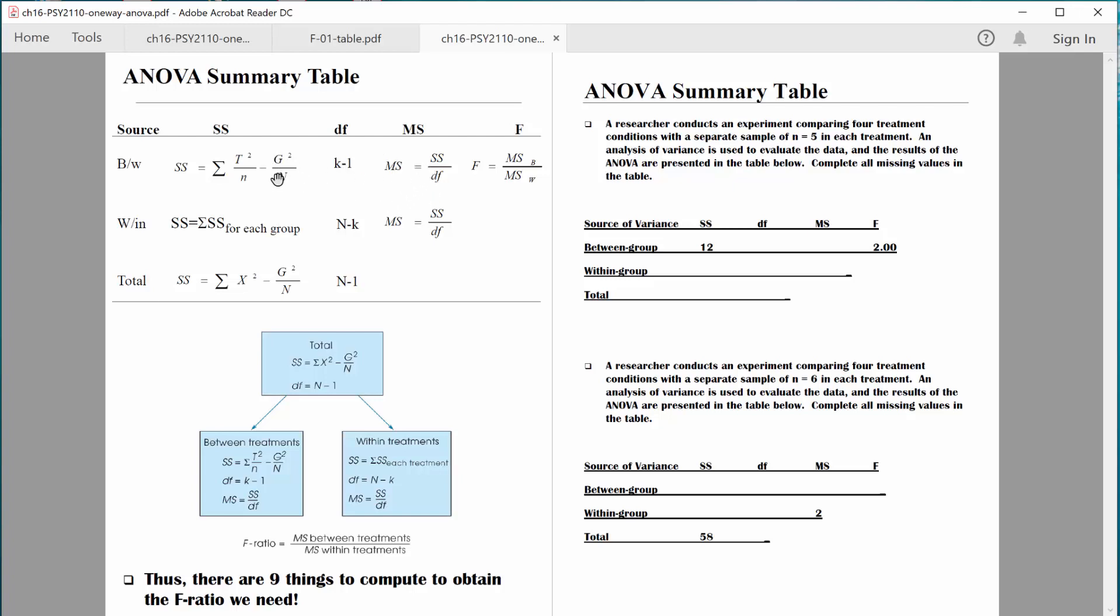And we've spent some time looking to see how the different elements of the source table work together. Like to get mean square, we take sum of squares and divide by degrees of freedom. To get the F ratio, we take mean square between and divide by mean square within. So in other words, the different elements of the table work together.